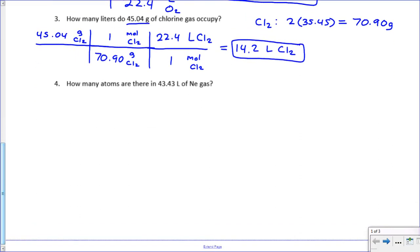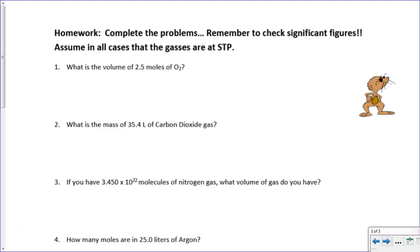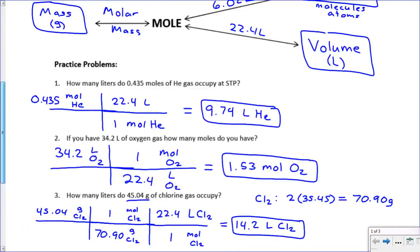Next, number four, it says how many atoms are there in 43.43 liters of Ne? So this time, we're starting with liters and we're asking how many atoms. So think of that flow chart again. We're starting in liters and it's asking how many atoms, which is particles. So to get there, what we have to do is we have to go from volume to moles and then we go from moles to particles. The conversion factor from volume to moles is 22.4. The conversion factor from moles to particles is 6.02 times 10 to the 23rd.